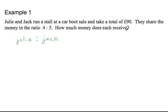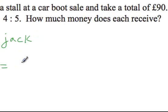We want to know how much money does each receive. Well, their ratio that they split their profits is 4 to 5. So we have to figure out how many parts are there in total between both of their take. And so that will be simply adding them up. Julie has 4 parts and Jack has 5. So the total is 9 parts.